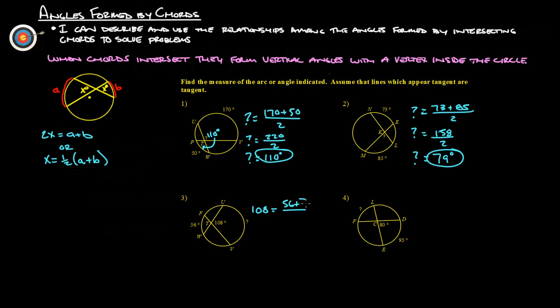So 56 plus question mark divided by 2 has to equal 108, right? So I'm just going to do this, put 108 over 1, and then we'll just do cross products, and these have to equal each other. So 108 times 2 has to equal 56 plus our unknown, our question mark. So 108 times 2 is 216,